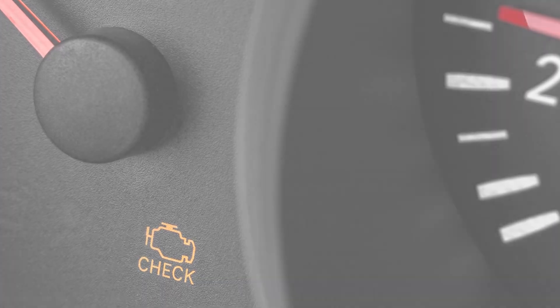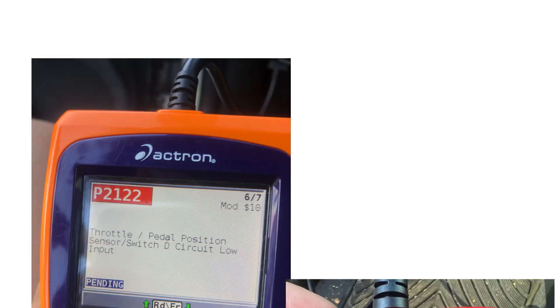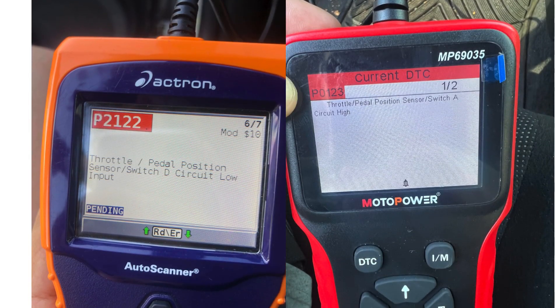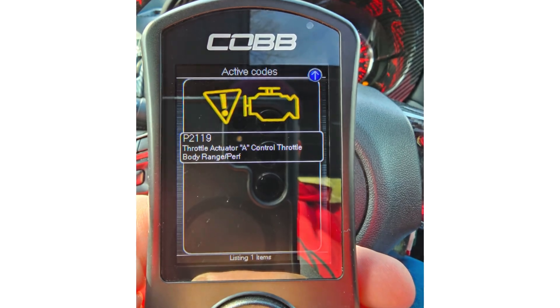Symptom 3: Check Engine Light. If your check engine light comes on, be sure to pay close attention to any diagnostic trouble codes related to the throttle position sensor or other throttle control components.